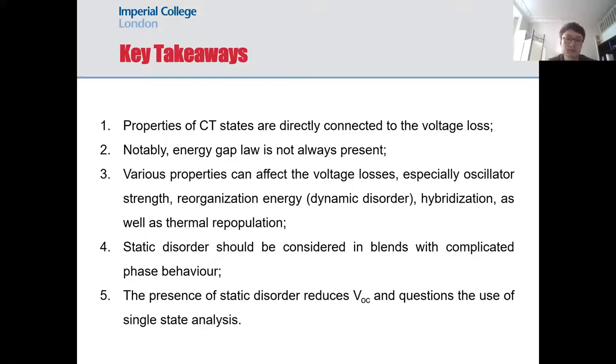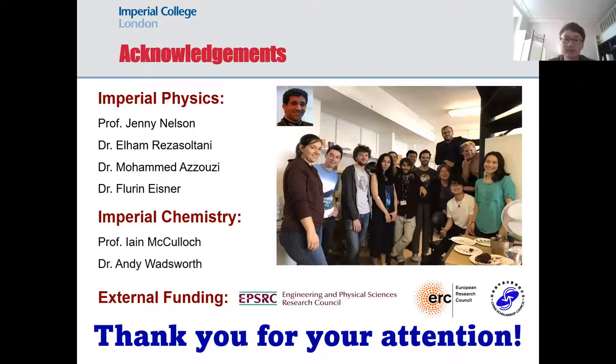In the last bit, I want to share one experimental example where the phase behavior is really complicated. You can see two different distinct CT states that result from the crystalline and amorphous interface. This behavior can only be explained with a static disorder model. I want to conclude by saying properties of charge transfer states are important and directly related to the analysis of voltage loss. Various properties can affect voltage loss, especially oscillator strength, reorganization energy, hybridization, and disorder. Thank you very much for your attention.